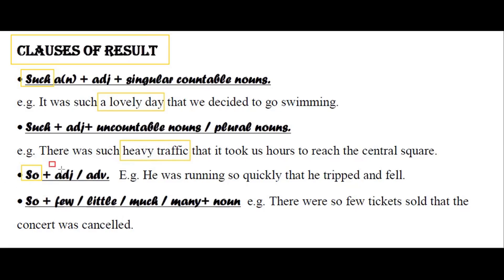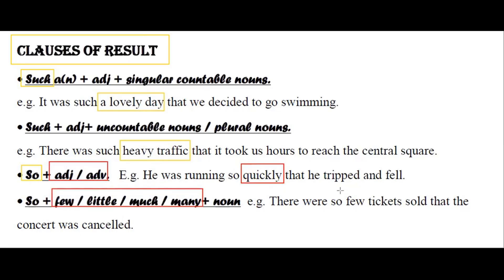After 'so', we can use an adjective or adverb. For example: 'He was running so quickly that he tripped and fell.' You can also use quantifiers like few, little, much, many after 'so'. For example: 'There were so few tickets sold that the concert was cancelled.'